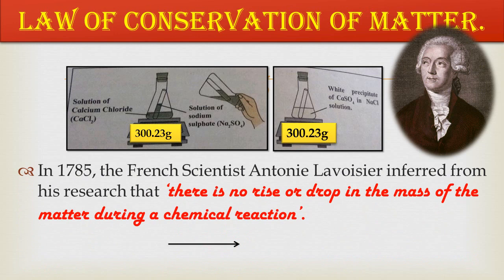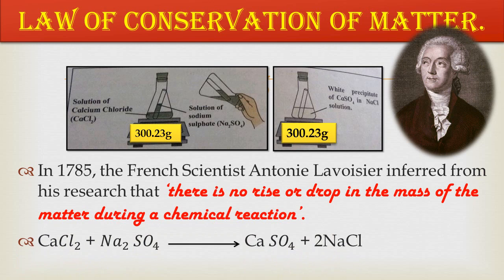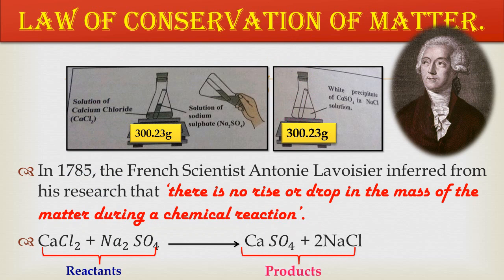In 1785, French scientist Antoine Lavoisier inferred from his research that there is no rise or drop in the mass of matter during a chemical reaction — the mass before and after the reaction is the same. In a chemical reaction, the total mass of the reactants (calcium chloride and sodium sulfate) equals the total mass of the products (calcium sulfate and sodium chloride). This is called the Law of Conservation of Matter.